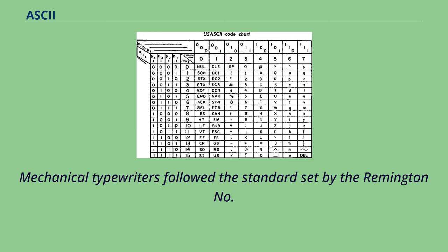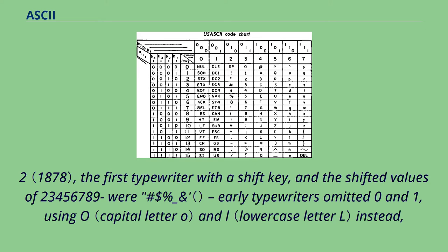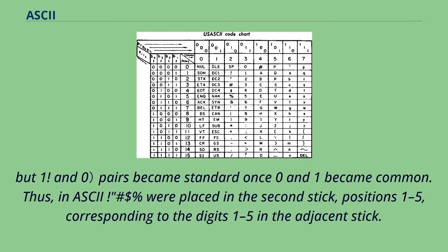Mechanical typewriters followed the standard set by the Remington No. 2, the first typewriter with a shift key, and the shifted values of 2, 3, 4, 5, 6, 7, 8, 9 were hash, dollar, percent, underscore, and similar symbols. The 1 and 0 pairs became standard once 0 and 1 became common.